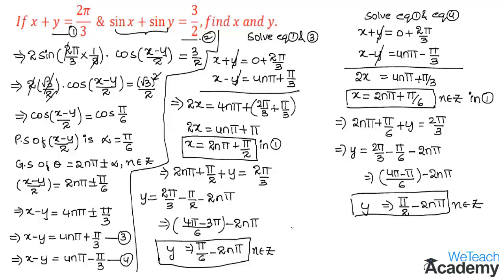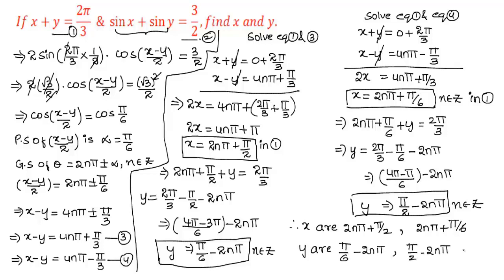Therefore, the values of x are 2nπ plus π/2 and 2nπ plus π/6. The corresponding values of y are π/6 minus 2nπ and π/2 minus 2nπ. These are all the values of x and y. Note the formula: the general solution of angle θ is 2nπ ± α when the equation is in the form cos θ equal to cos k, where α is the value of k.